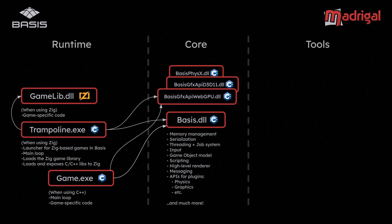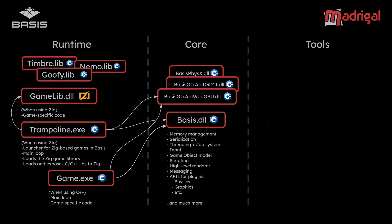So the Trampoline.exe loads that, and it might also load other things. Because you might want to use Timbre to play back audio, Nemo to do mission scripting, or Goofy to do UI — these are all C++ libraries. And because they're C++ libraries, gamelib.dll, which is in ZIG, can't directly load them. So they're actually loaded from the Trampoline.exe, which then exposes them to ZIG via a C API. But these are statically linked, so they're linked into the Trampoline.exe.